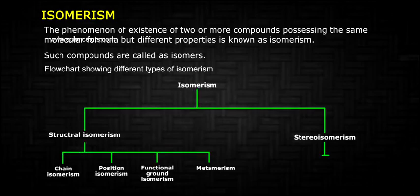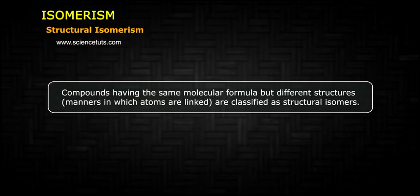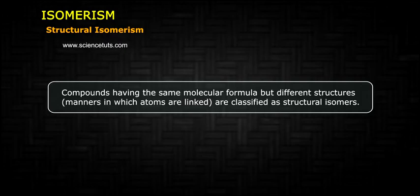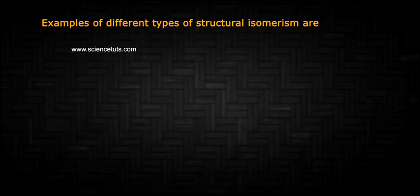Flow charts showing different types of isomerism. Structural isomerism: compounds having the same molecular formula but different structures — that is, different manners in which atoms are linked — are classified as structural isomers. Examples of different types of structural isomerism are as follows.